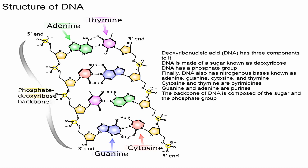Additionally, DNA also has a phosphate group. You can see the little P here — there are phosphate groups running along the structure.